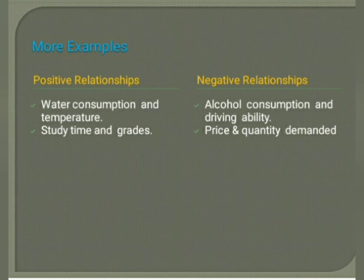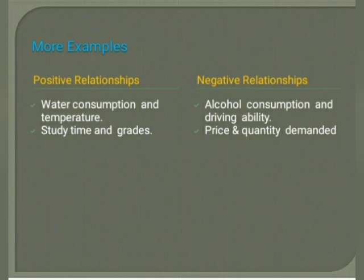Examples of positive relationship: water consumption and temperature, and study time and grade. Examples of negative relationship: alcohol consumption and driving ability, and price and quantity demanded. These are the negative relationship examples.